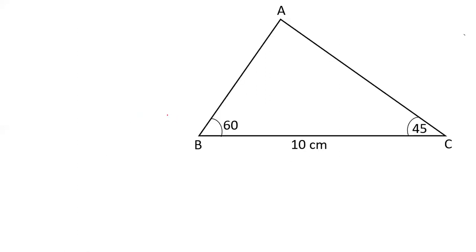First of all, draw a perpendicular from A to BC. This creates a 90-degree angle at D. In triangle ABD, angle B is 60 and angle D is 90, so angle A is 30 degrees. In triangle ACD, angle D is 90 and angle C is 45, so angle A is 45 degrees.